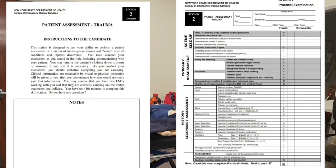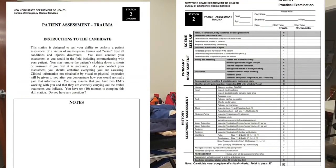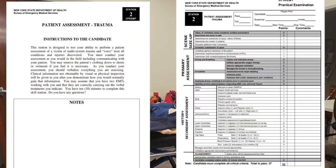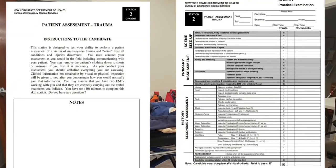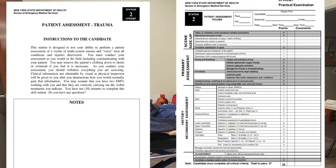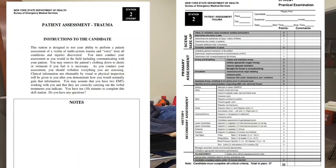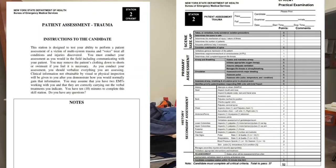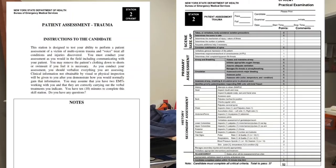This station is designed to test your ability to perform a patient assessment of a victim of multi-system trauma and to treat all conditions and injuries discovered. You must conduct your assessment as you would in the field, including communicating with your patient. You may remove the patient's clothing down to shorts or swimsuit if necessary. As you conduct your assessment, you should verbalize everything you are assessing. Clinical information not obtainable by visual or physical inspection will be given to you after you demonstrate how you would normally gain that information.